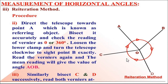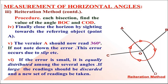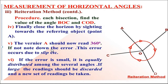Similarly, bisect the successive points D and C by turning the telescope clockwise, and for each bisection measure the angles BOD, DOC, and COA. Finally, close the horizon by sighting the last object, that is A. The vernier A should now read 360 degrees. If not, then there is an error.